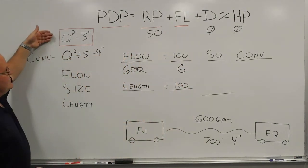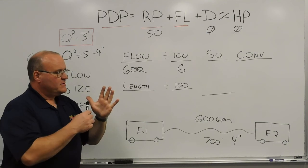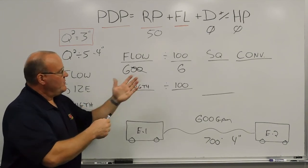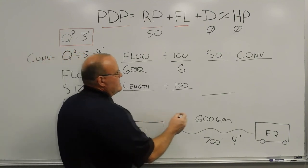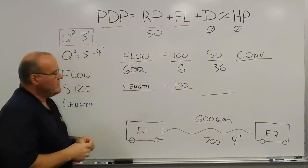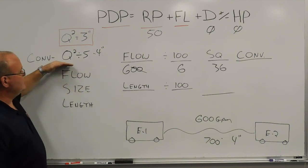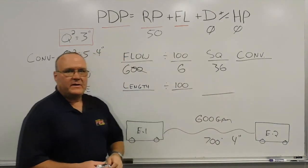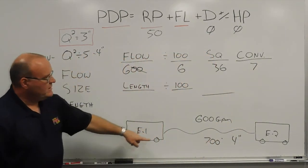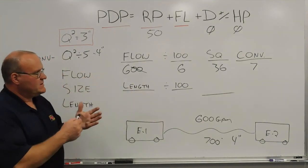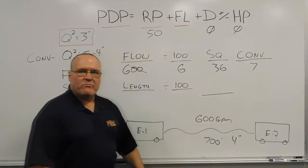We start with the 3-inch hose number, which is always our baseline. So 600 gallons a minute gives us 6. Using our hand method on the calculator — 600 gallons a minute, 6 times 6 — Q-squared gives me 36 pounds of friction loss for every 100 feet of 3-inch hose. Then we go from 3-inch to 4-inch hose by dividing that number by 5, which gives us approximately 7 pounds of friction loss for every 100 feet of 4-inch hose flowing 600 gallons a minute.